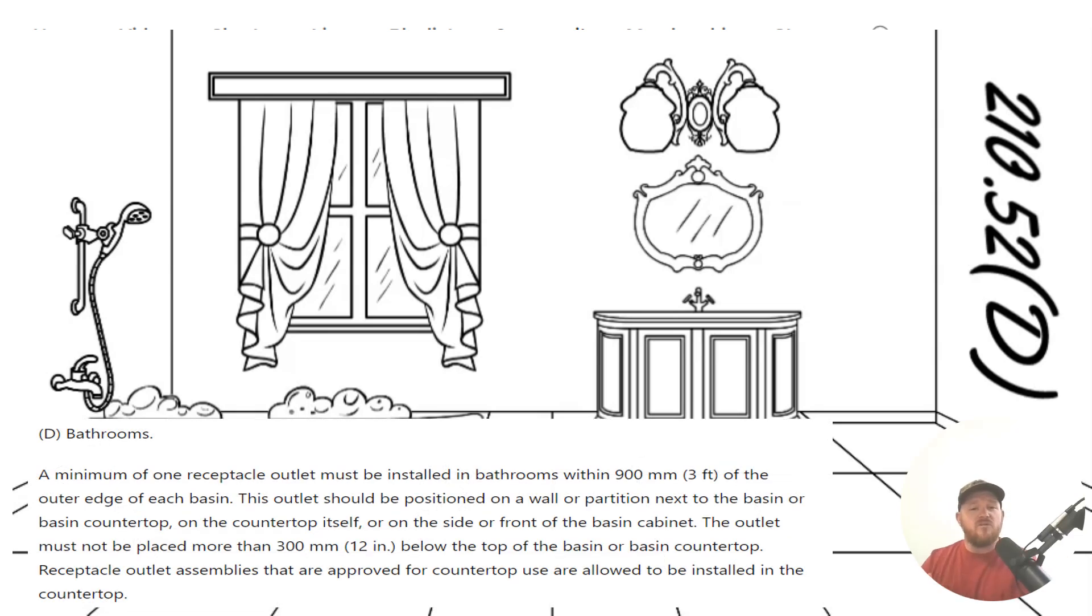A minimum of one receptacle outlet must be installed in bathrooms within three feet of the outer edge of each basin. The outlet should be positioned on a wall or partition that is next to the basin, or basin countertop, or on the countertop itself, or on the side or front of the basin cabinet. Now let's stop right there, and then we'll finish reading it here in just a moment.